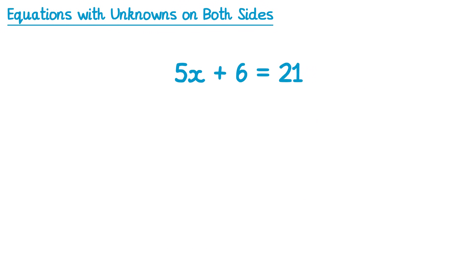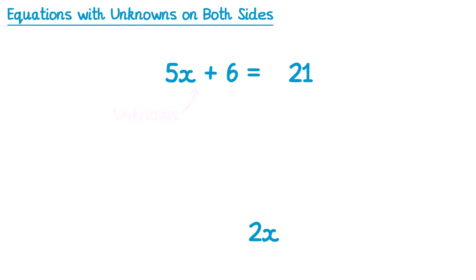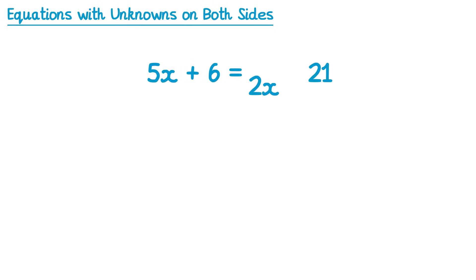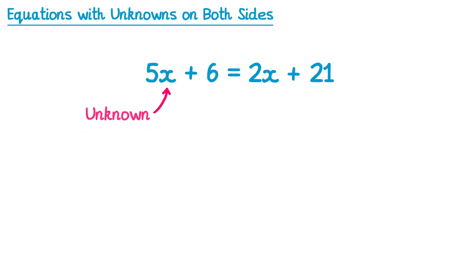If we look at this equation here, the letter x is the unknown — the value we're trying to find when we solve the equation. At the moment, there are unknowns on the left side of this equation but not the right-hand side; the right-hand side just has 21. However, if we introduce this term here, you can now see that we have an unknown on the left and an unknown on the right side of the equation. It's this type of equation we're going to solve in this video.